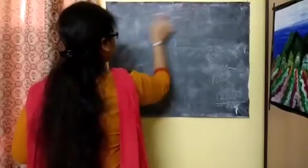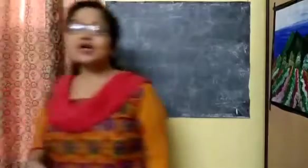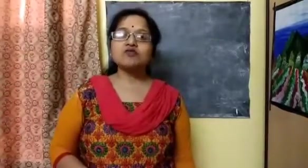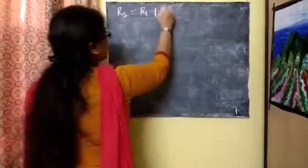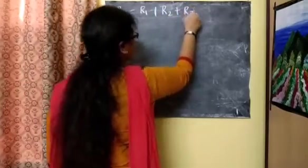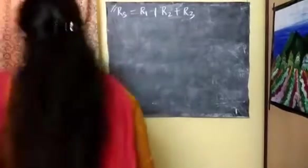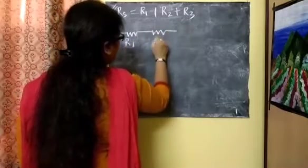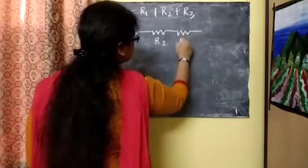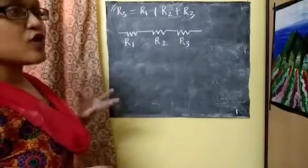A series connection is a potential divider or voltage divider, and a parallel connection is a current divider circuit. The formula we had done earlier: Rs = R1 + R2 + R3. Let me explain where this formula comes from. Suppose I have a series combination of three resistances R1, R2, R3. This is just to show you how the formula is derived.